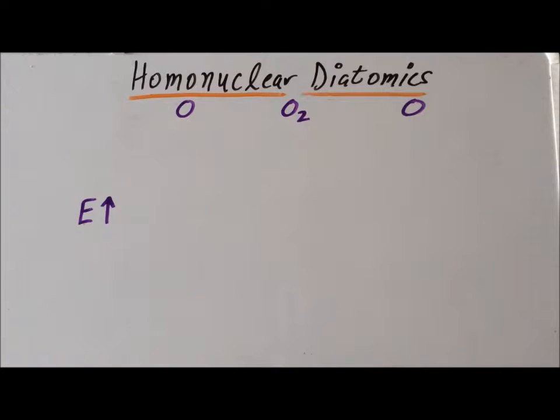Hello. In this video, we are going to sketch out molecular orbital diagrams for the homonuclear diatomic molecules and ions at the right-hand side, the end, of the second row of the periodic table.